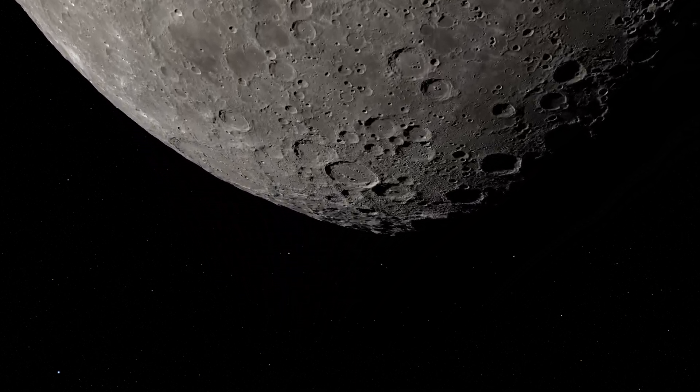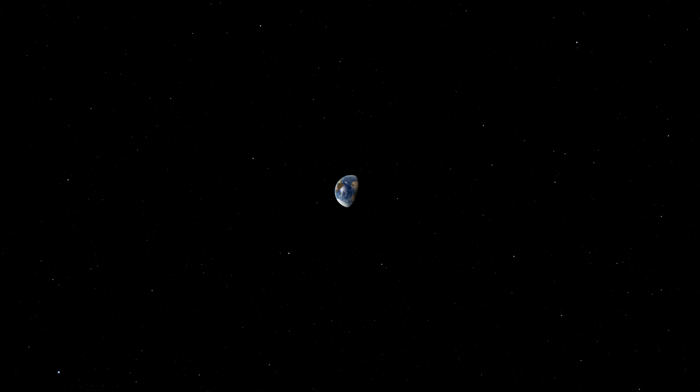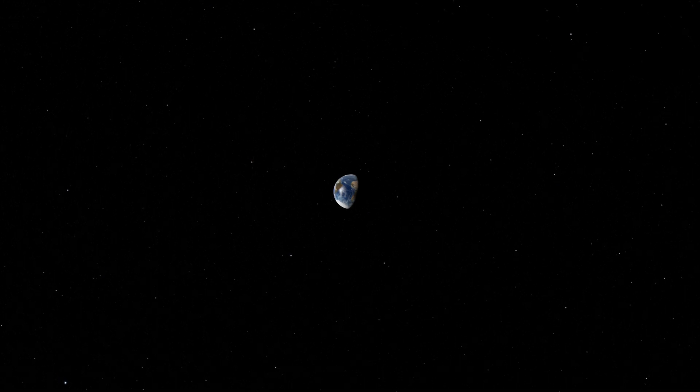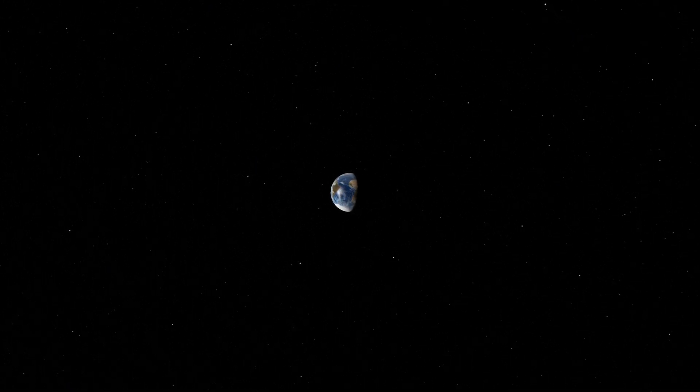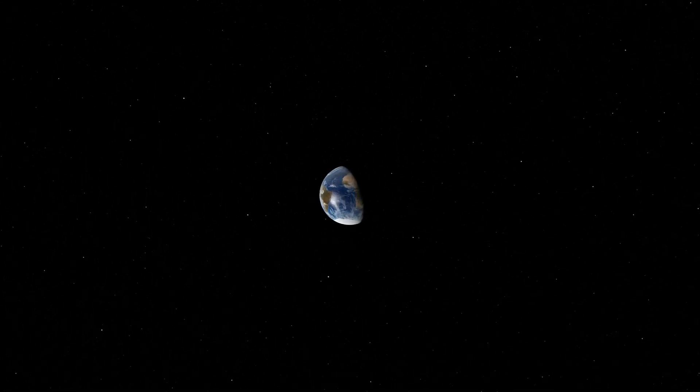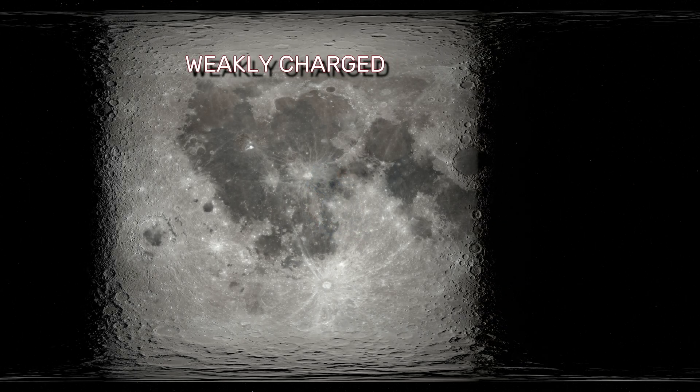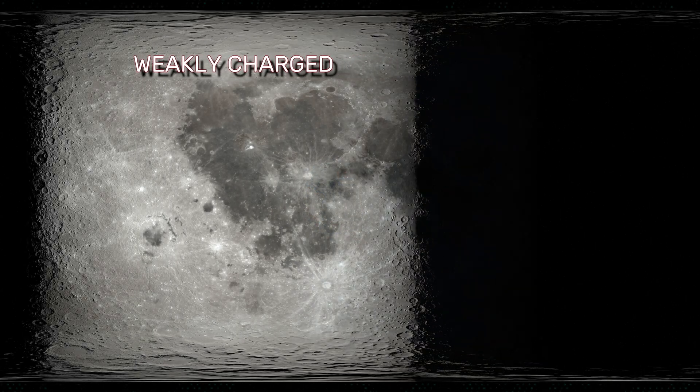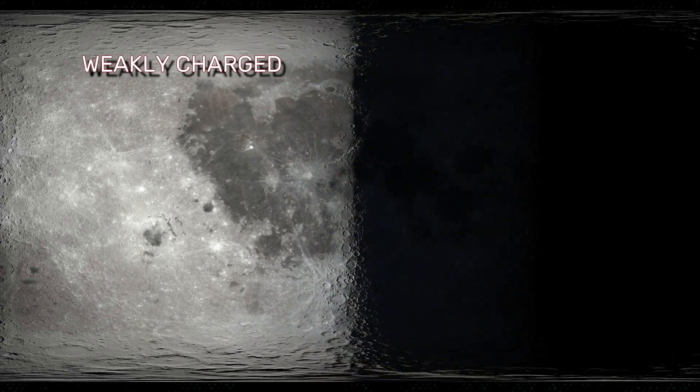Electrostatic repulsion from the magnetotail interaction causes particles of regolith to float high above the surface. Diaphanous wind occurs when these charged particles of moon dust move between strongly and weakly charged areas of the lunar surface, the most notable being the terminator between the light and dark side.